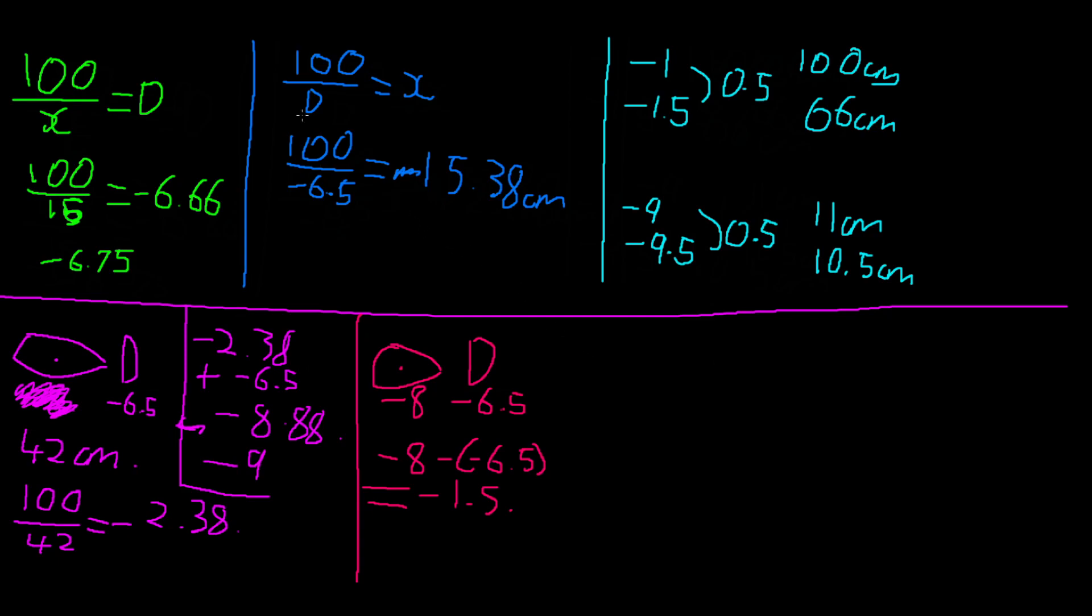And then you just throw it back into this equation. So you would do 100 divided by minus 1.5, and that equals a value of minus 66.6 centimeters. Actually we already did it up here. We get rid of the minus sign. And there you go.